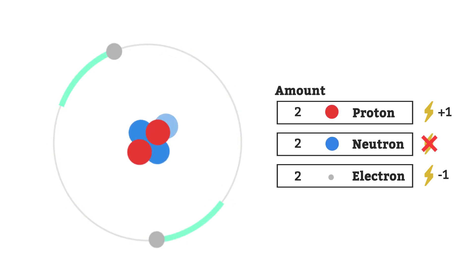Neutrons are not charged. It really doesn't matter how many of these there are in the nucleus of an atom. It doesn't affect its chemistry. But they do help to bind the nucleus together, which would otherwise contain only the positively charged protons that repel each other.